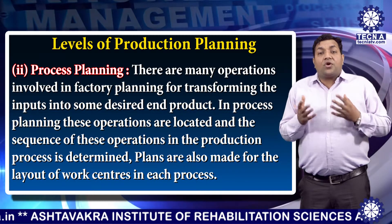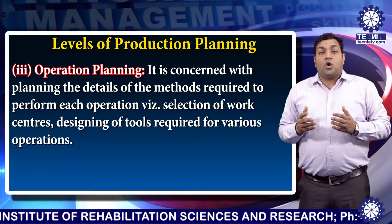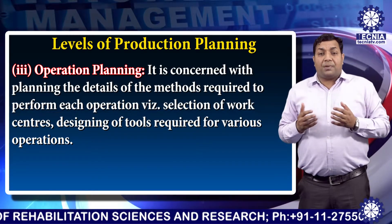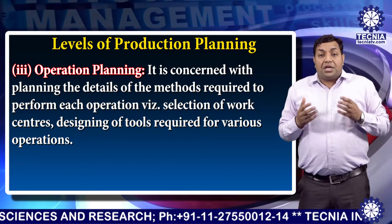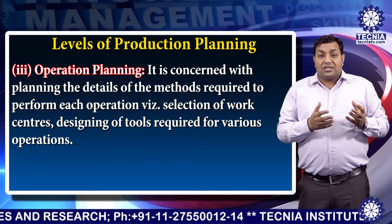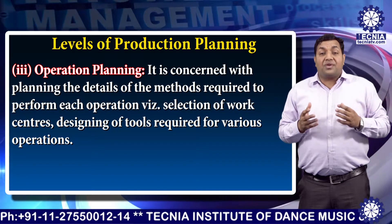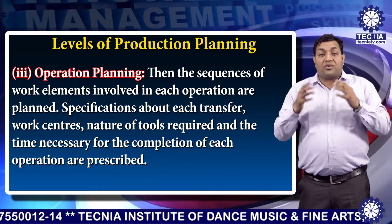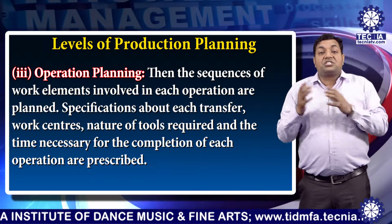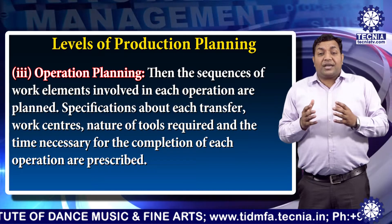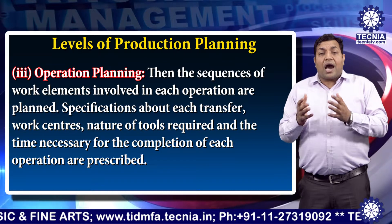The third level is operation planning. It is concerned with planning the details of the methods required to perform each operation, including the selection of work centers, the designing of tools required for the various operations, and the sequence of work elements involved in each operation, which are planned systematically. Specifications about each work center, the nature of the tools required, and the time necessary for completing each operation are described in a systematic way.